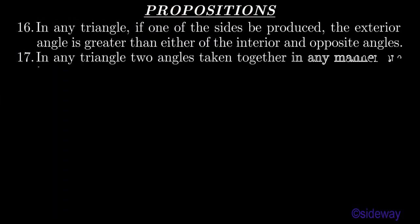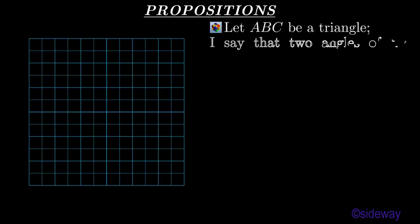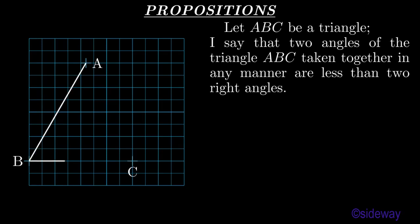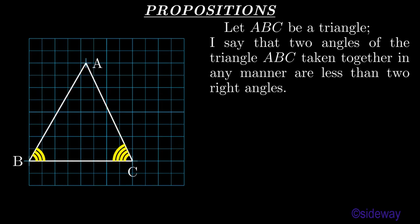Proposition 17. In any triangle, two angles taken together in any manner are less than two right angles. Let ABC be a triangle. I say that two angles of the triangle ABC, taken together in any manner, are less than two right angles.